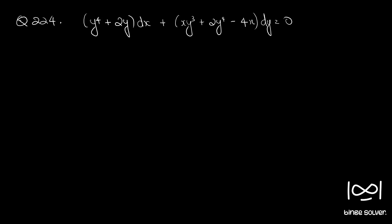Question number 224. The equation is: y raised to 4 plus 2y, into dx, plus xy cubed plus 2y raised to 4 minus 4x, dy, equal to 0.